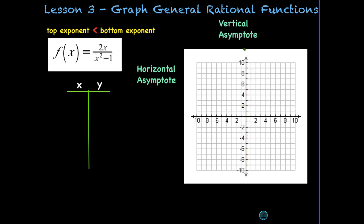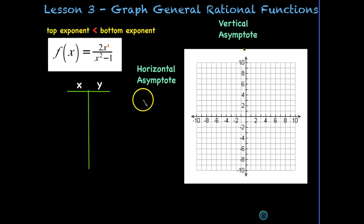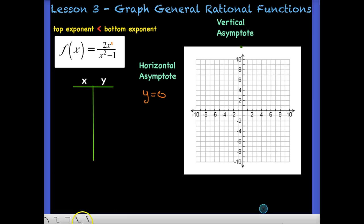Let's try another example where the top exponent is less than the bottom exponent. This is only x to the 1st and the denominator is x squared. When the top is less than the bottom, we always have a horizontal asymptote of y = 0, so we plot that right along the x-axis.